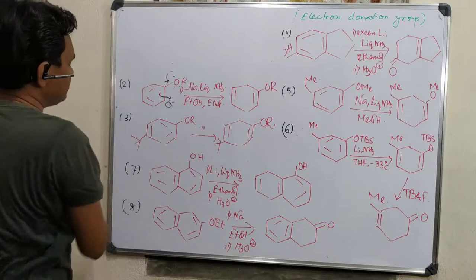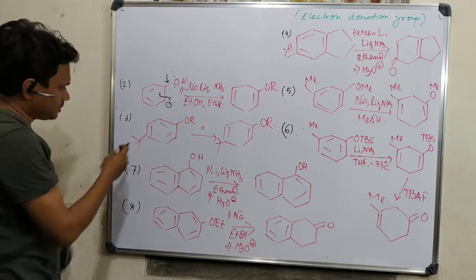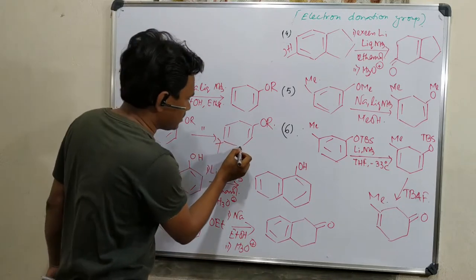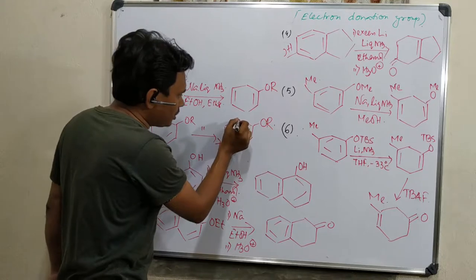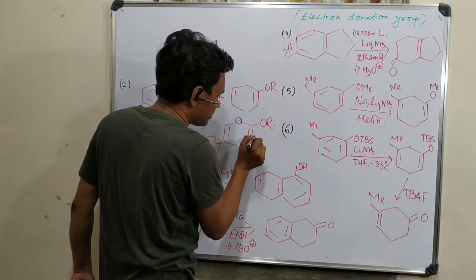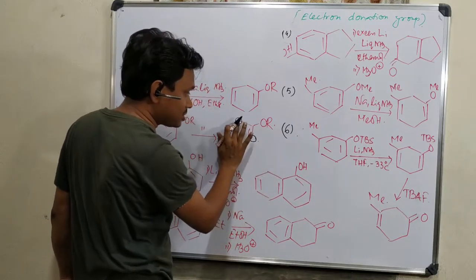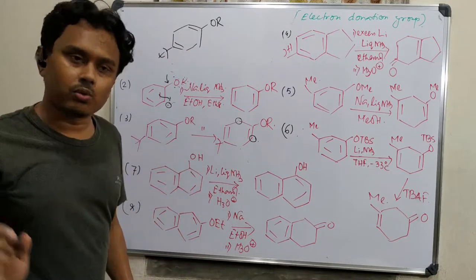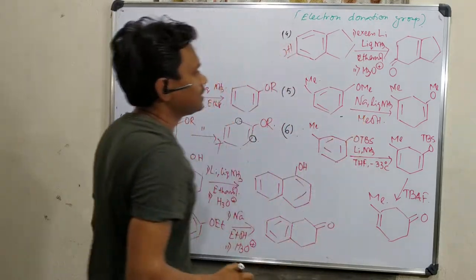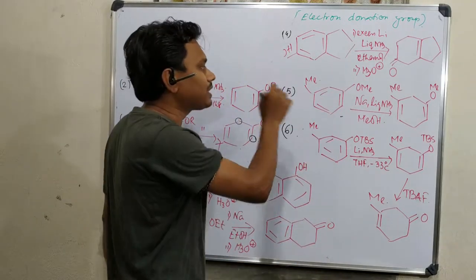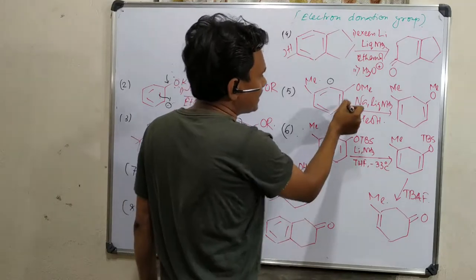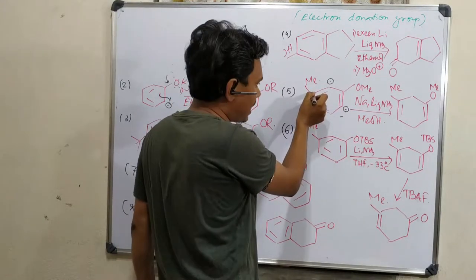Similarly, for para-substituted derivatives with an alkyl group, they will show similar observations. Here there is confusion because the molecule is not symmetrical. The question is: where will the negative charge go? If it comes to the side where the methyl group is attached, stabilization is less. Compared to if the protonation occurs on the other side — the negative charge generated there has less destabilization from the methyl group.